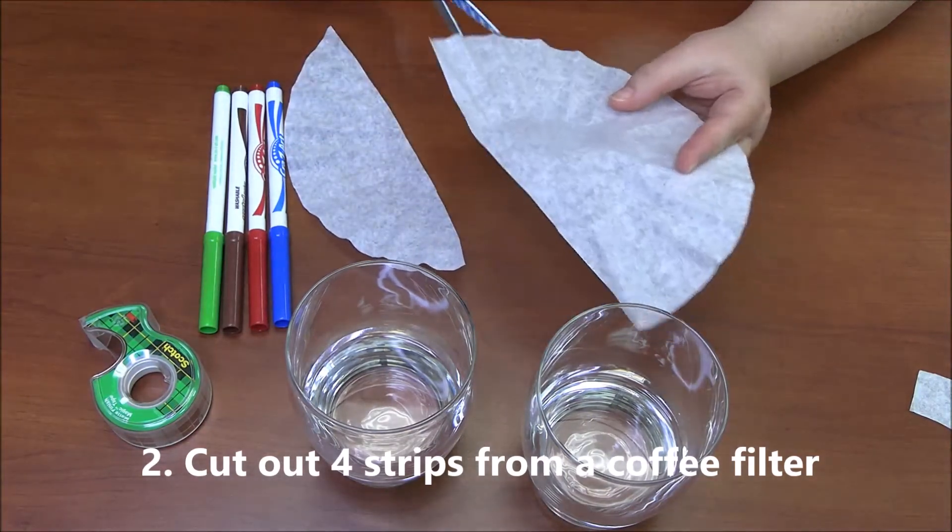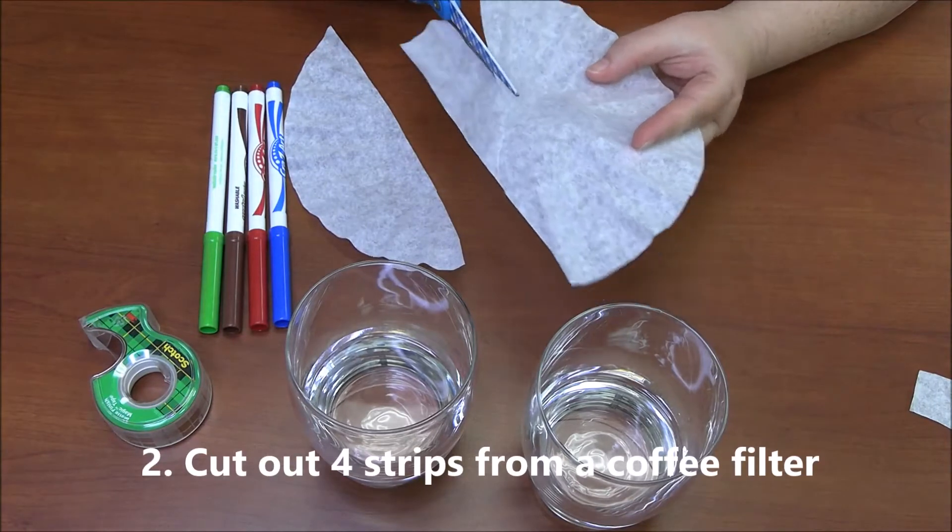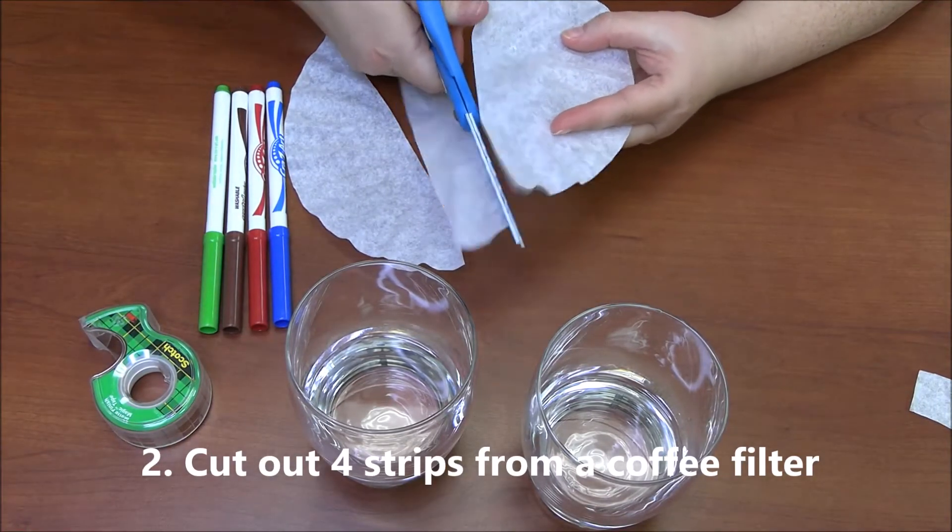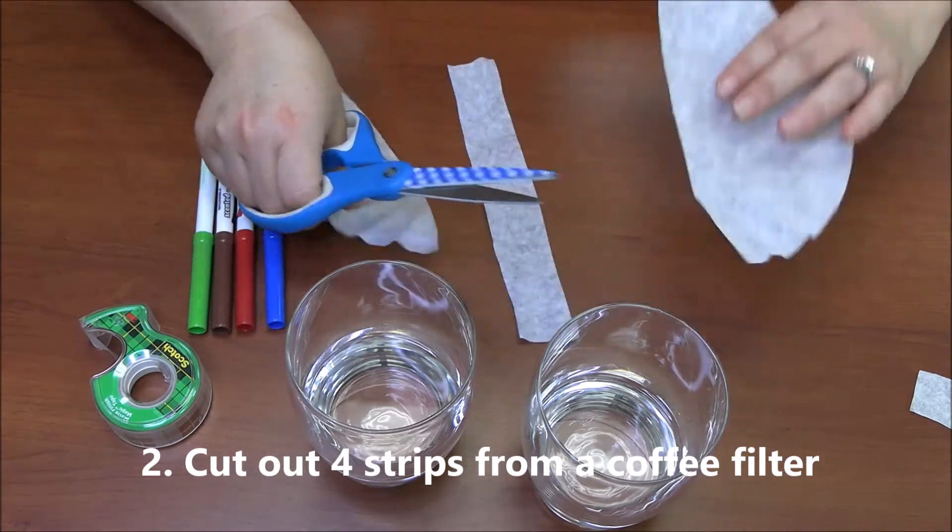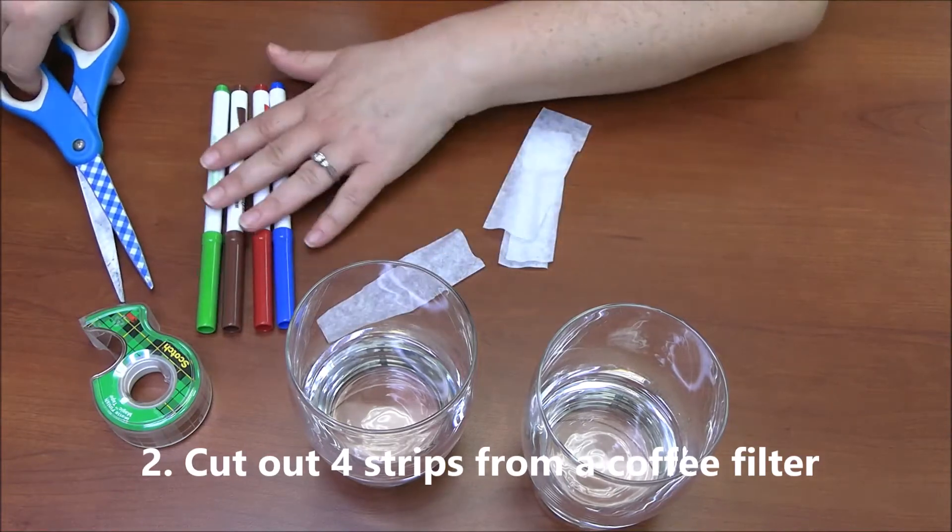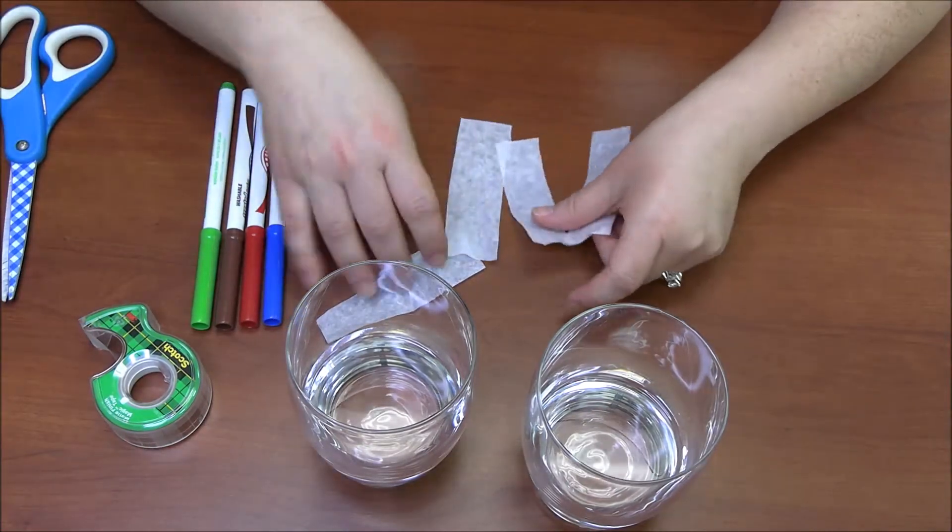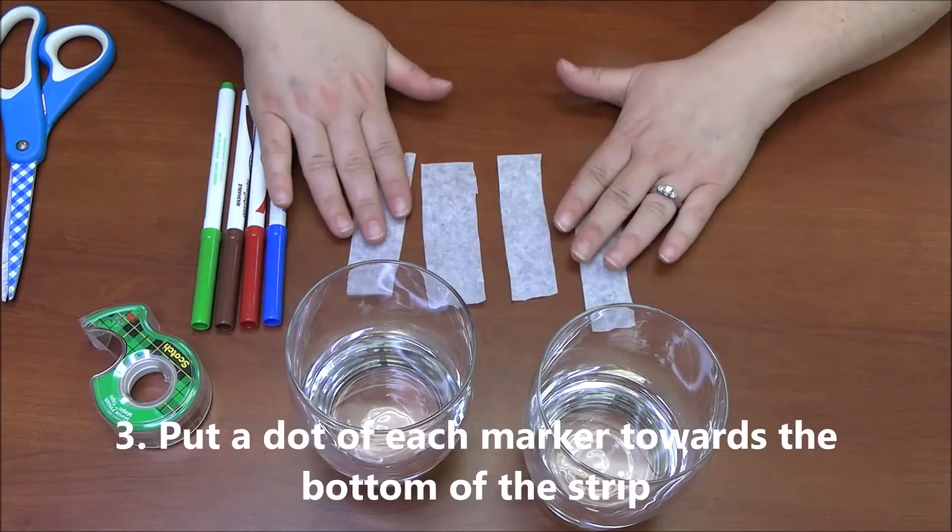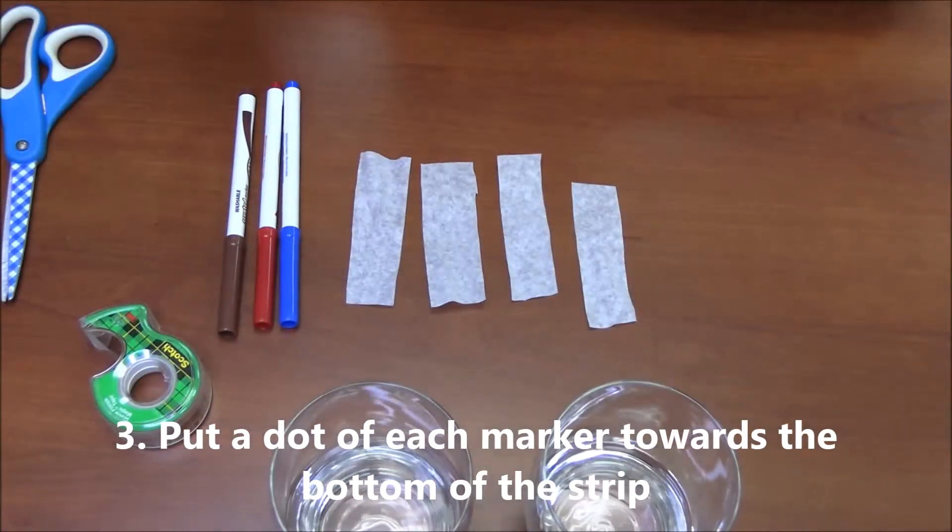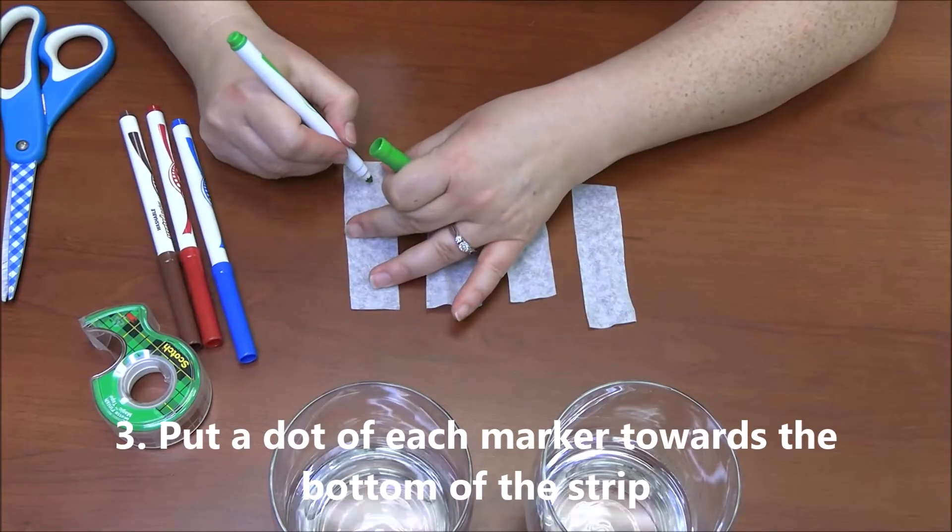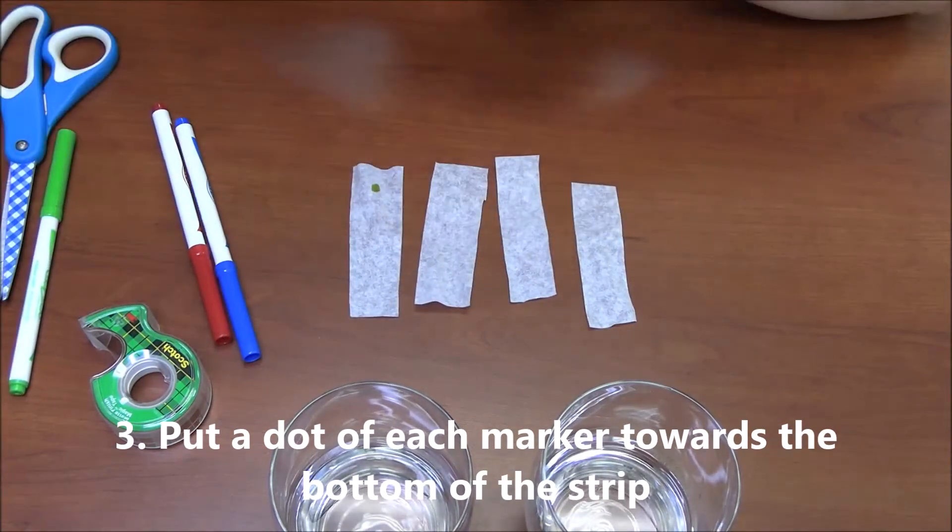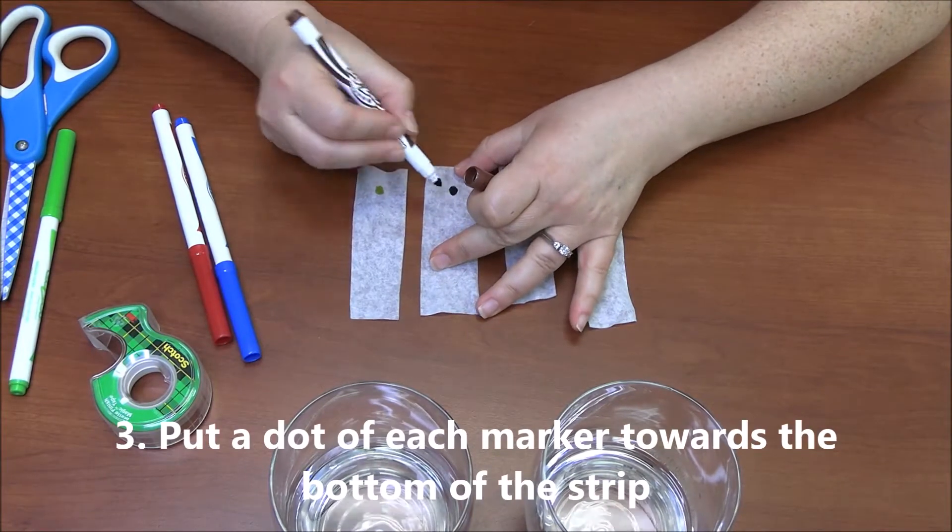All we're going to do is put dots of color on them, so you're going to cut out your strips. I've already cut out four because I've got my four markers. If you have more, you'll cut out more. So here are my four strips, and then what I'm going to do is just put a little dot towards the bottom. I'm just going to color in a little dot of each color.